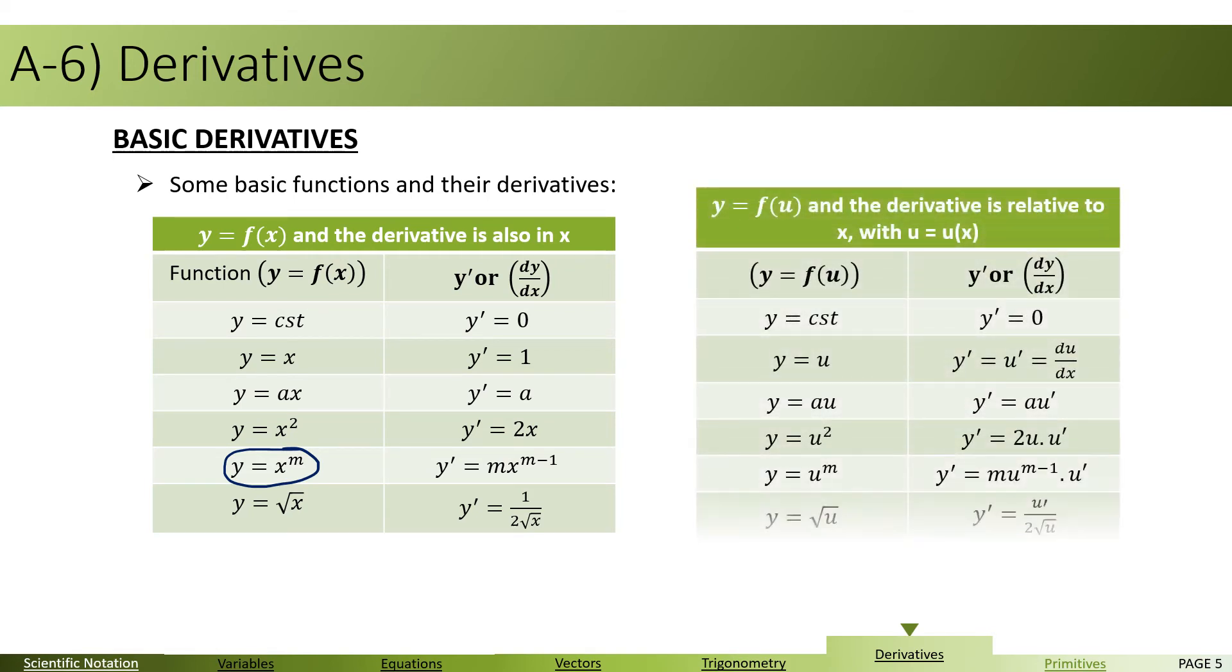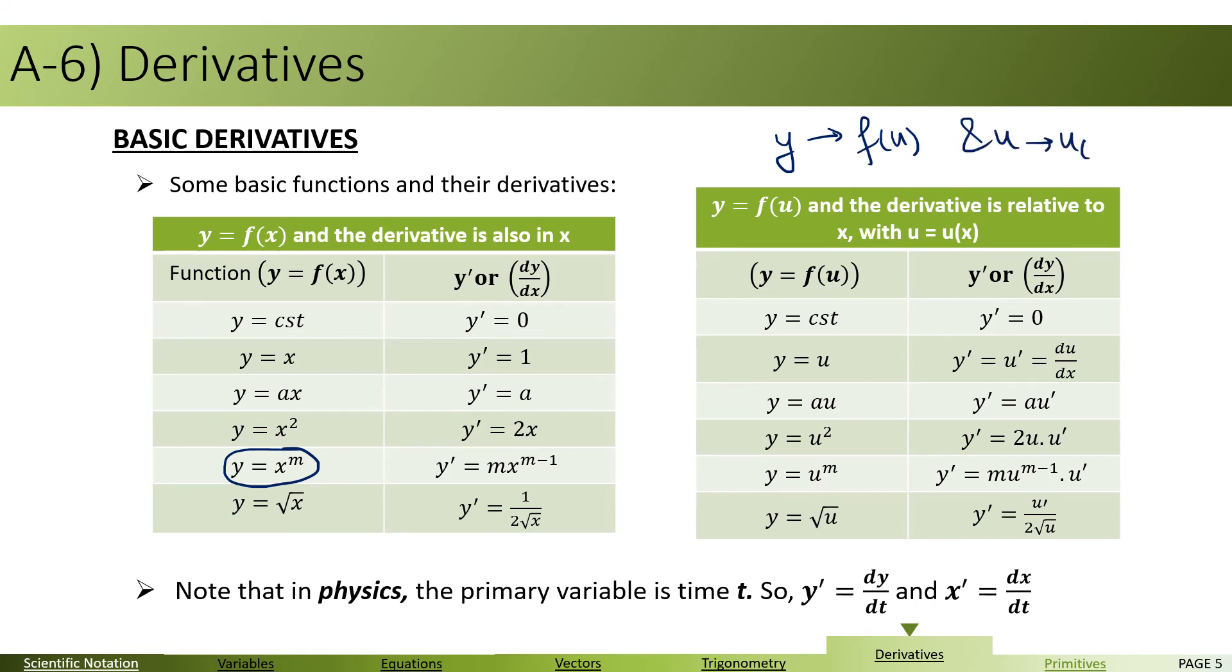Now, considering the general case in which y is given as a function of u, a variable, and u in turn is a function of x. So here we have y is a function of u, and u is a function of x. If you derive y with respect to x, you need to have an intermediate stage which is u.